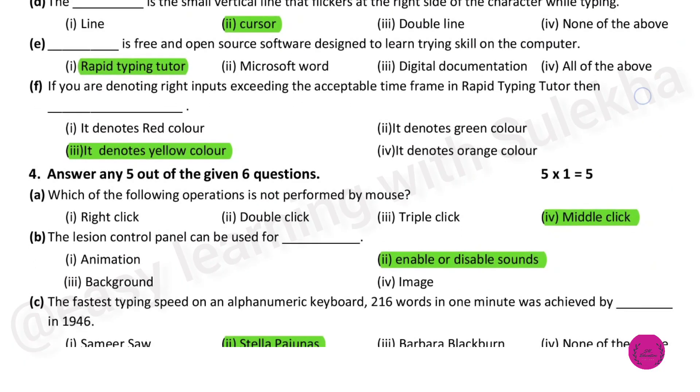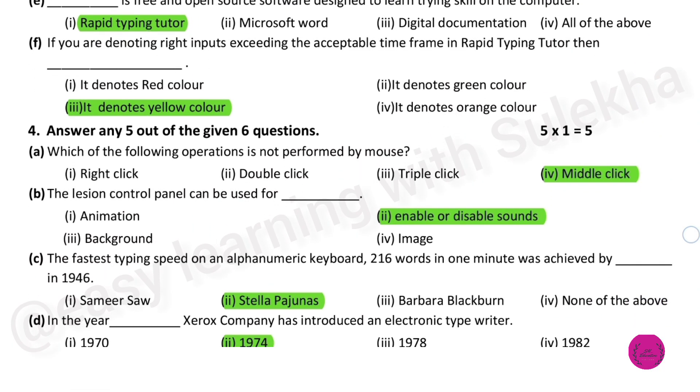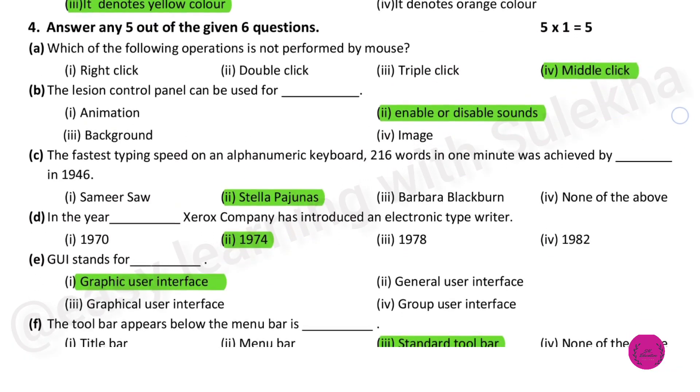Blank is free and open source software designed to learn typing skills on the computer, that is Rapid Typing Tutor. If you are denoting wrong inputs exceeding the acceptable time frame in Rapid Typing Tutor, then it denotes yellow color.